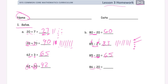And then this 86 minus 20 — just to show you, for example — if we put eight tens and six ones: one, two, three, four, five, six, seven, eight tens and one, two, three, four, five, six ones. And we're going to subtract 20, that's two tens right here. And you can just count what's left: 10, 20, 30, 40, 50, 60. And this is still six. So it's 66.